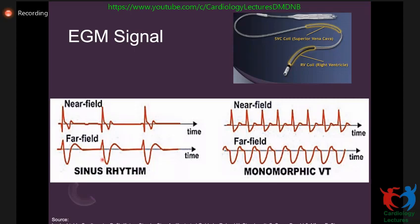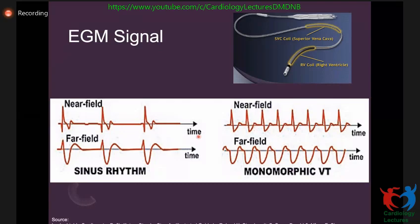Here's an example. This is a near-field signal and this is a far-field signal. In sinus rhythm, the near-field shows a very subtle change during VT — the morphology changes, but it's not dramatic. However, in the far-field, there is an obvious change in morphology from sinus rhythm to VT morphology. So far-field signals give you more visible change and you can more easily identify whether it's VT or not.